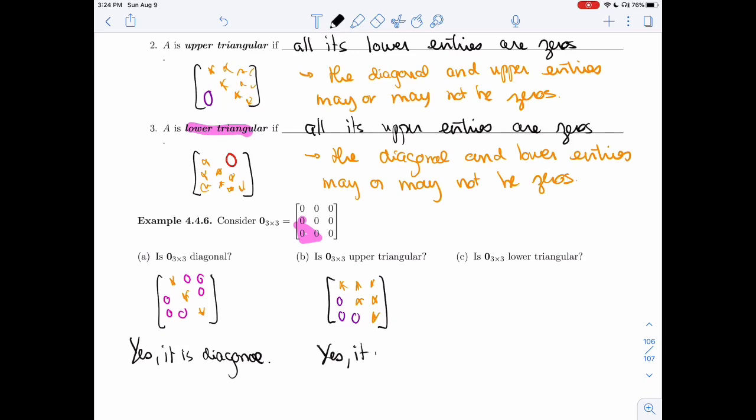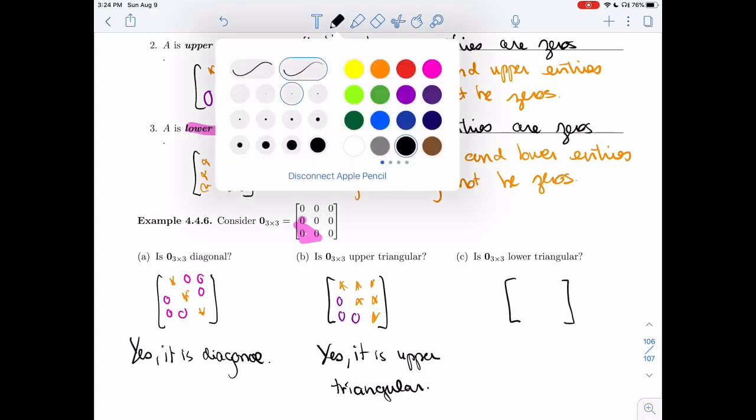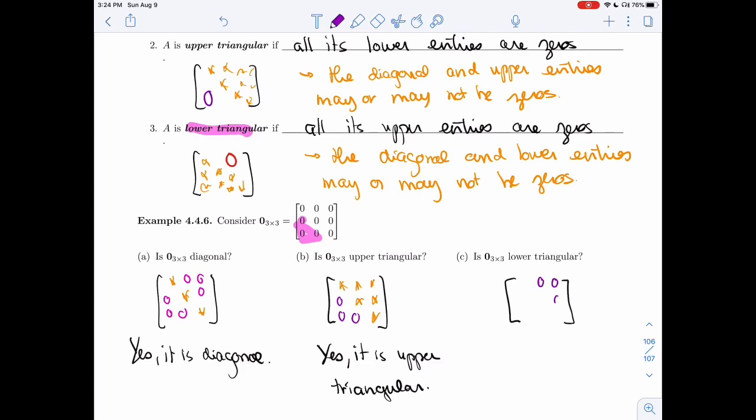And is it lower triangular? Well, in that case, I need those three upper entries to be 0, everything else, the diagonal and the lower entries, no restrictions on them. And so it would fit here again because I have these three 0s. And so, yes.